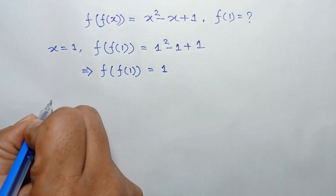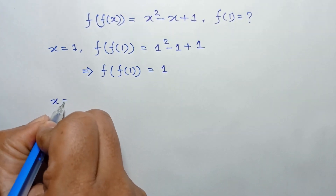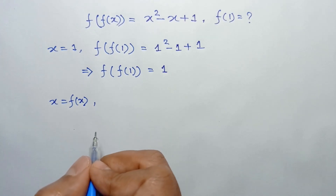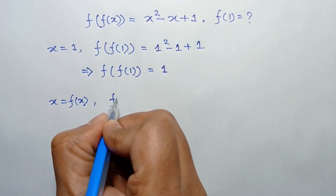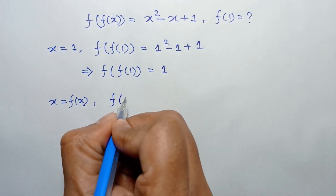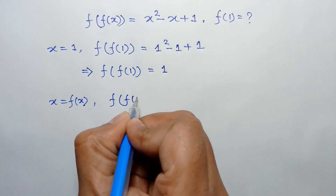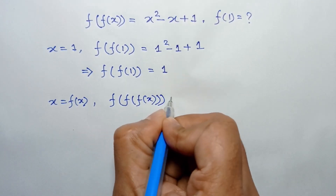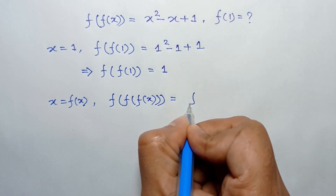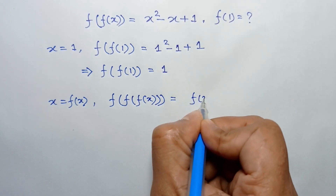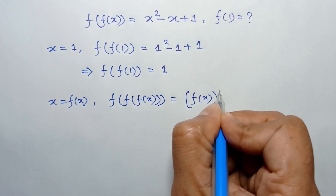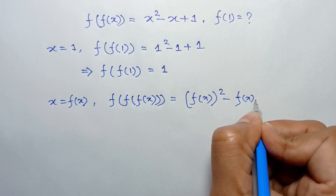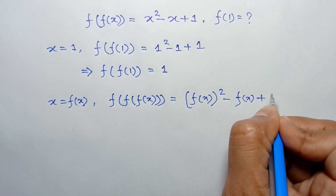Now putting x equal to f(x) in the main function, we will have f(f(x)) equal to f(x) squared minus f(x) plus one.